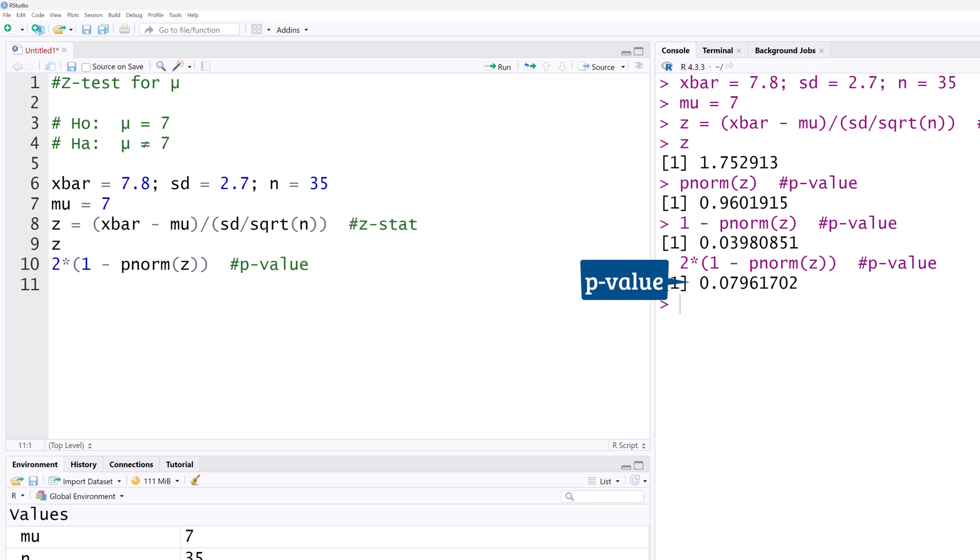Now, typically, we reject the null hypothesis if the P value is less than the specified significance level alpha for the test. Let's assume alpha is 0.05. Since this P value is greater than alpha, we will fail to reject the null hypothesis at alpha equals 0.05.